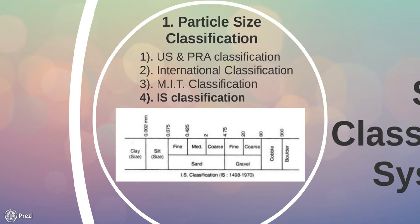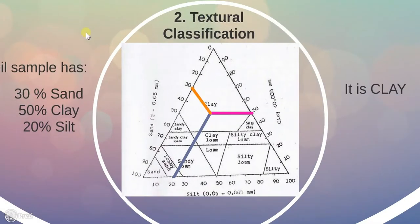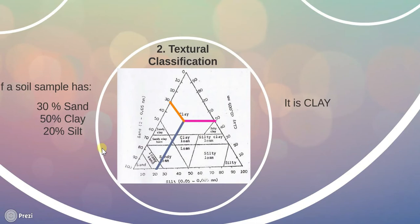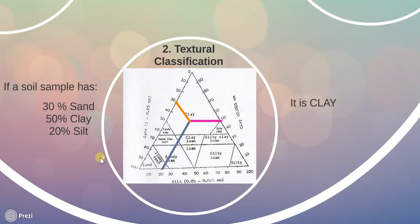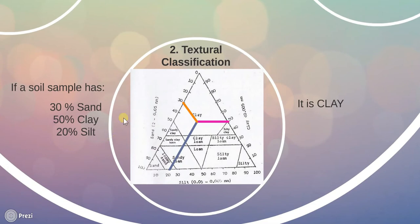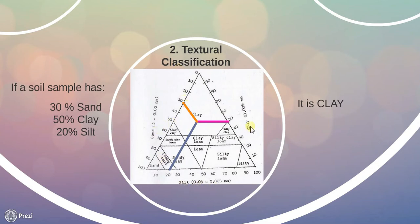Moving forward, textural classification. Soil occurring in nature is composed of different percentages of sand, silt, and clay. Soil classification of composite soils exclusively based on the particle size distribution is known as textural classification. The triangular classification system suggested by the US Bureau of Public Roads is commonly known as textural classification. The term texture is used to express the percentage of three constituents of soils: namely sand, silt, and clay.